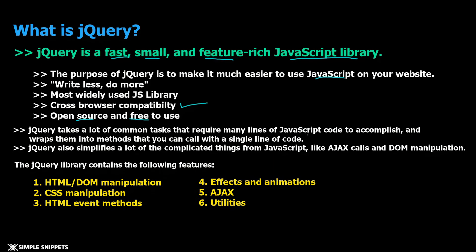jQuery also simplifies complicated things from JavaScript like AJAX calls and DOM manipulations. The primary features that the jQuery library contains are: HTML DOM manipulations - similar to what we did using document.getElementById but done in a much simpler way; CSS manipulations; HTML events, which are handled differently in jQuery; many effects and animations achievable in single lines of code; AJAX (Asynchronous JavaScript and XML); and various utilities.